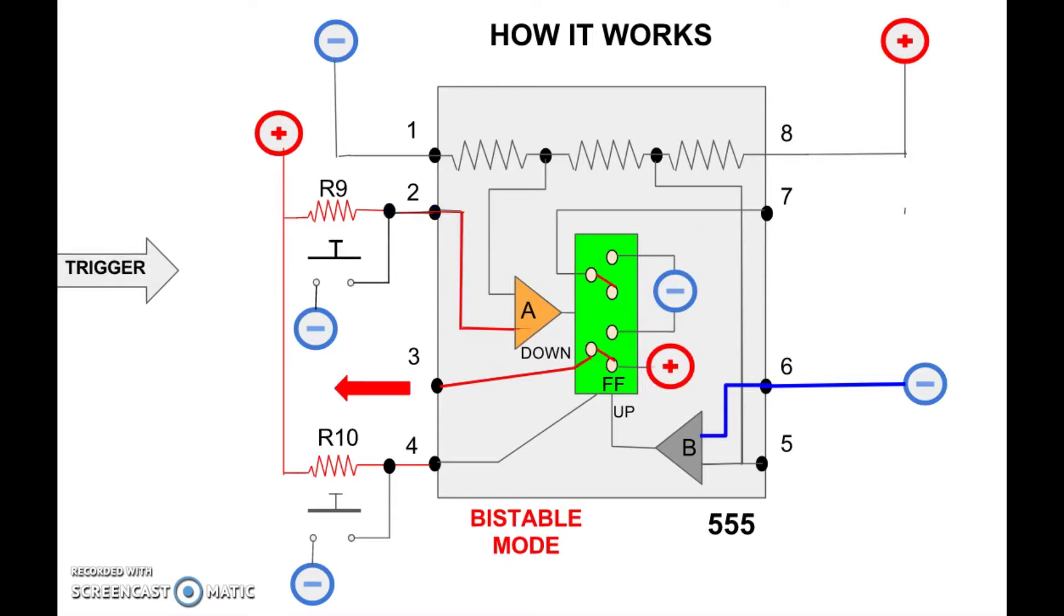How to reverse the situation if comparator B is disabled? The answer is a negative pulse to pin 4 turns the output negative.